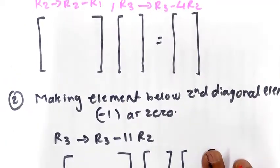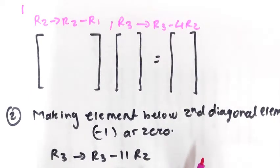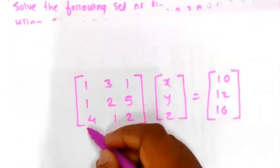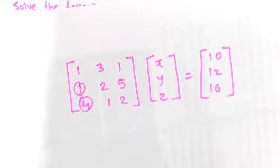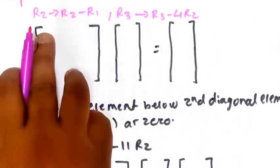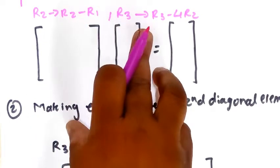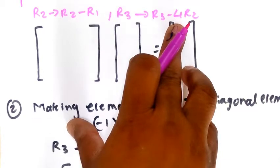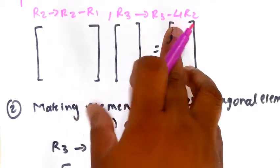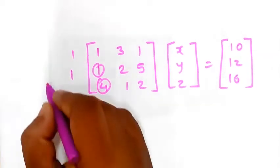The next step is to reduce the above matrix to upper triangular form. You have to convert the first column's below-diagonal elements to zero using row transformations. The transformation is R2 = R2 - R1, which gives 1 - 1 = 0 in the first column of row 2.